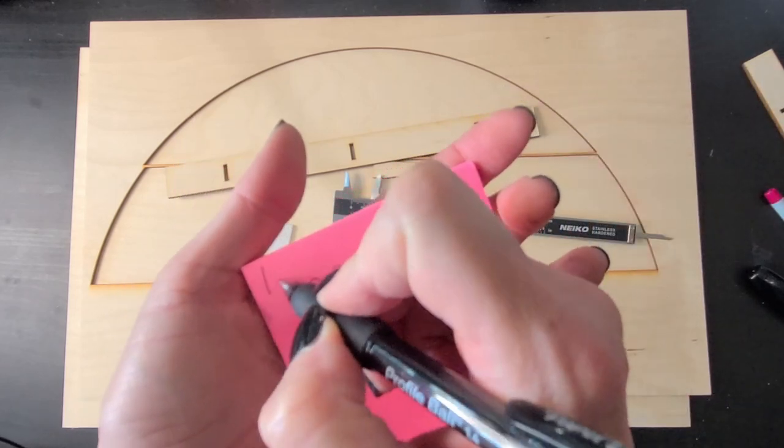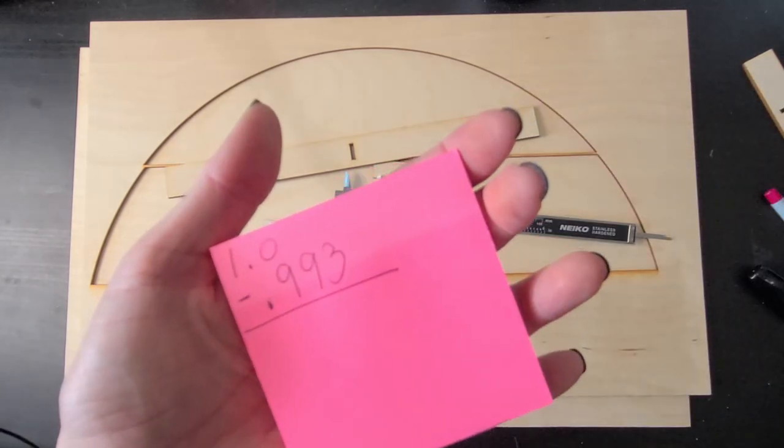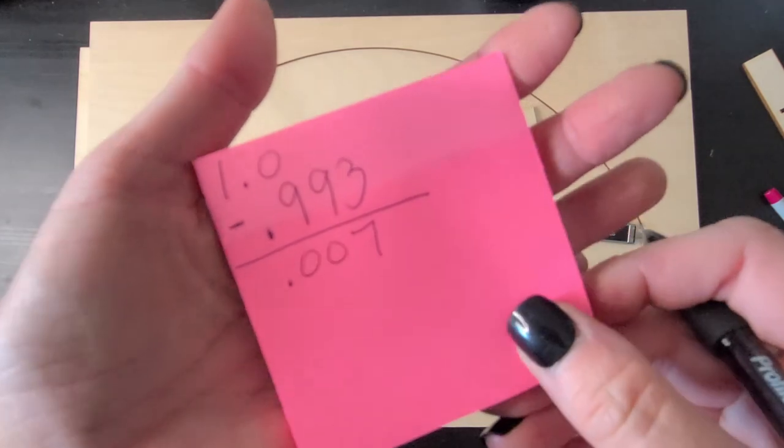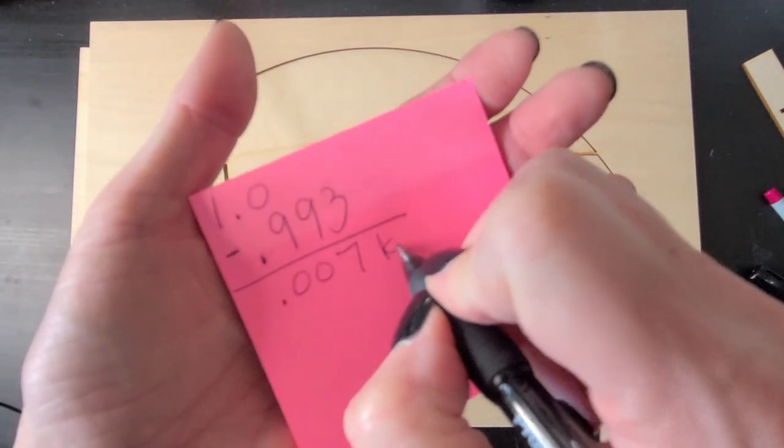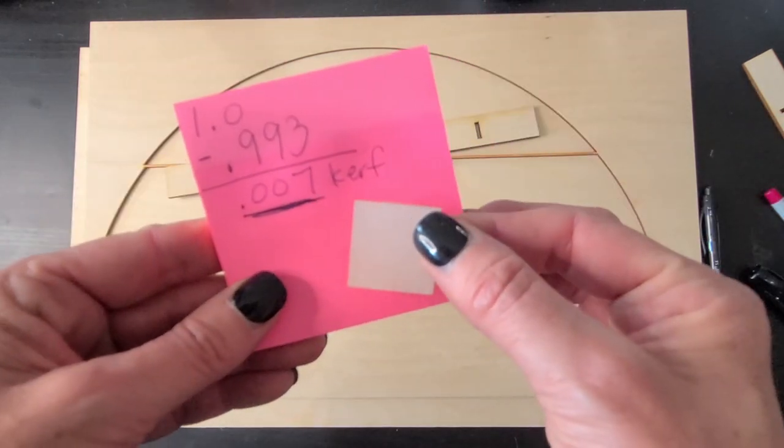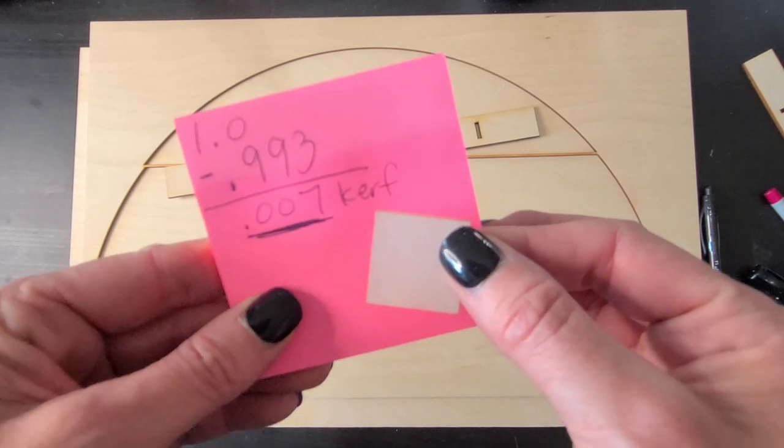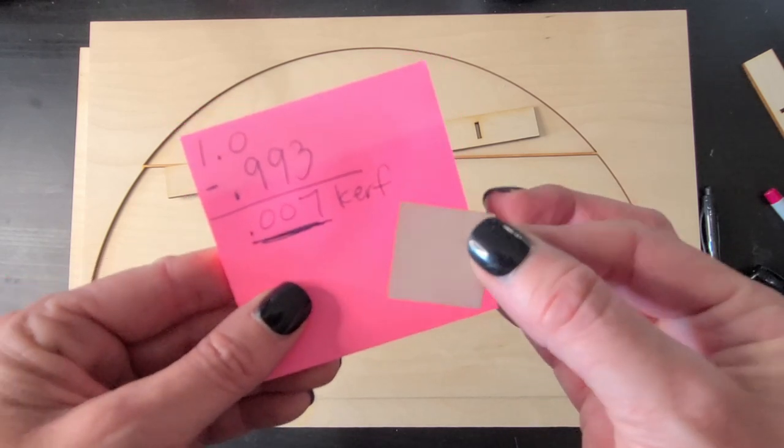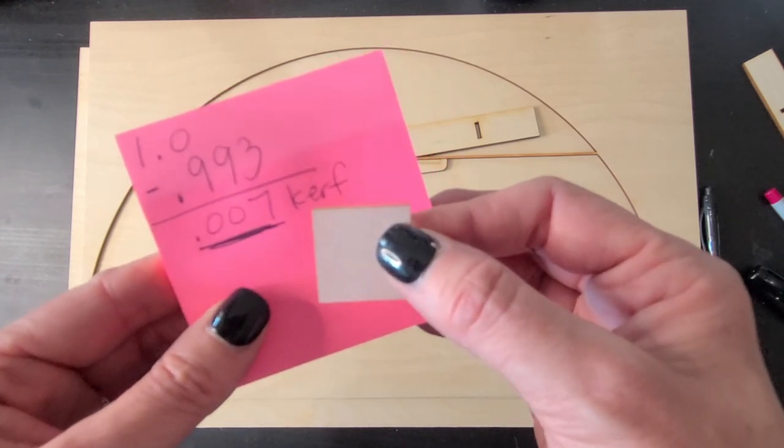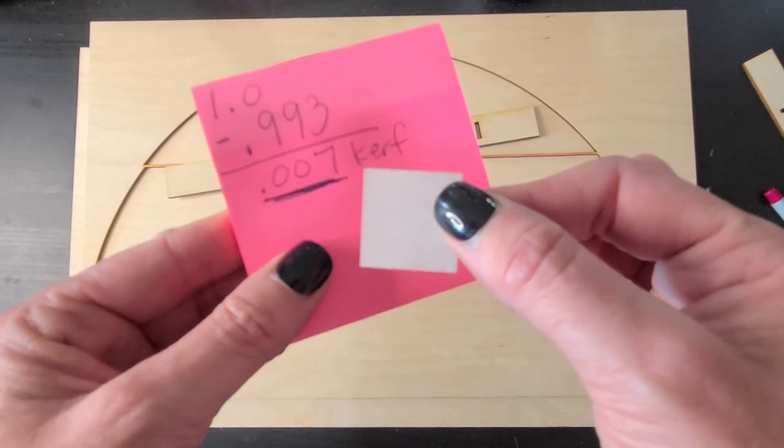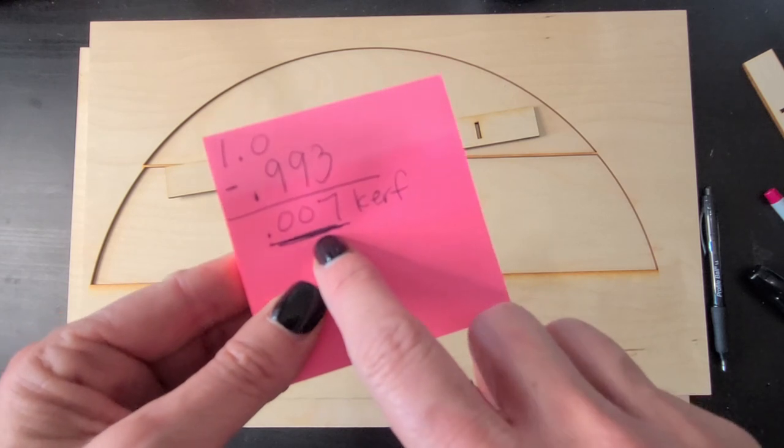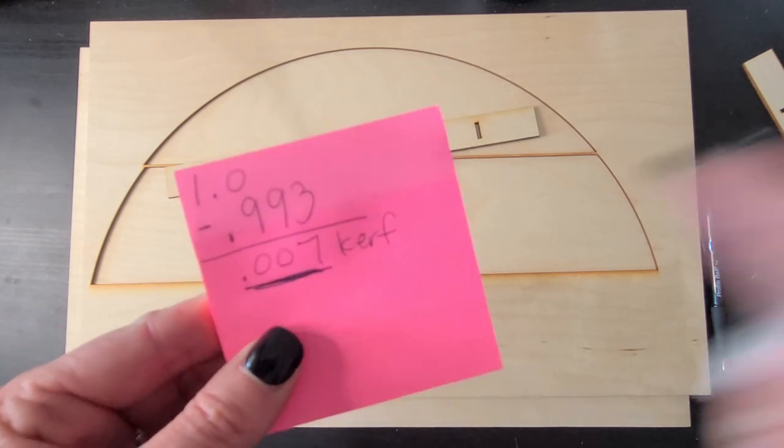0.993. And remember I started out at one inch. So I'm just going to subtract those. All right, and it comes out to 0.007 is my difference. And so that is the kerf of my machine. So that's the number I need to remember. So this little test with this little square is really what helped me to understand. Cause I was like, how in the world do I find out the kerf of my machine? So do this little one inch square test and get your kerf. And then write this number down because this is what you need to remember and use anytime you are working with slots.